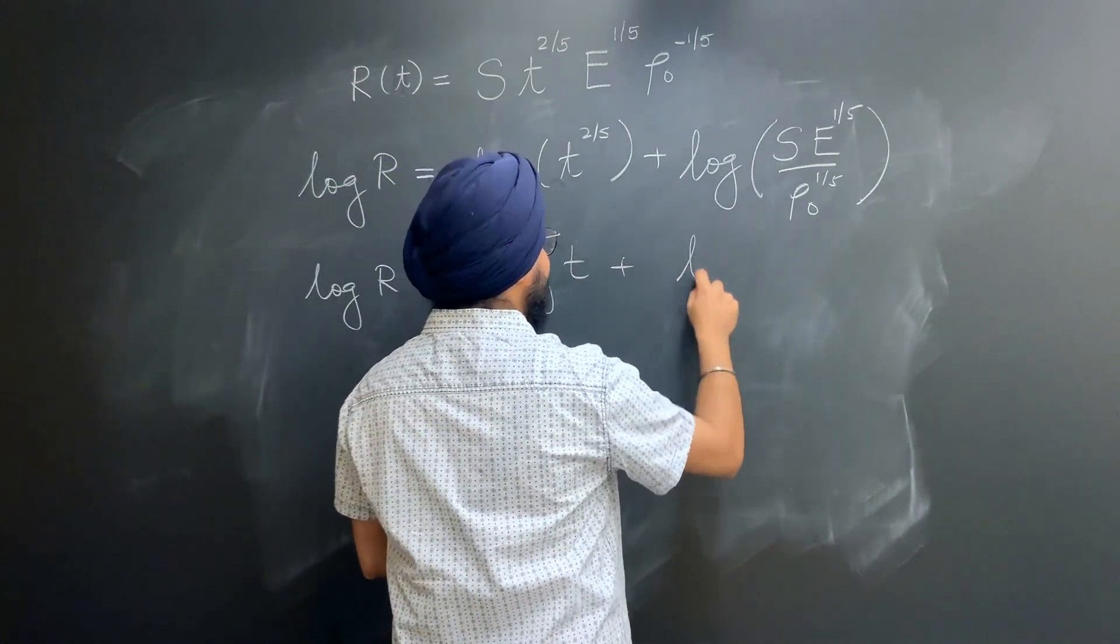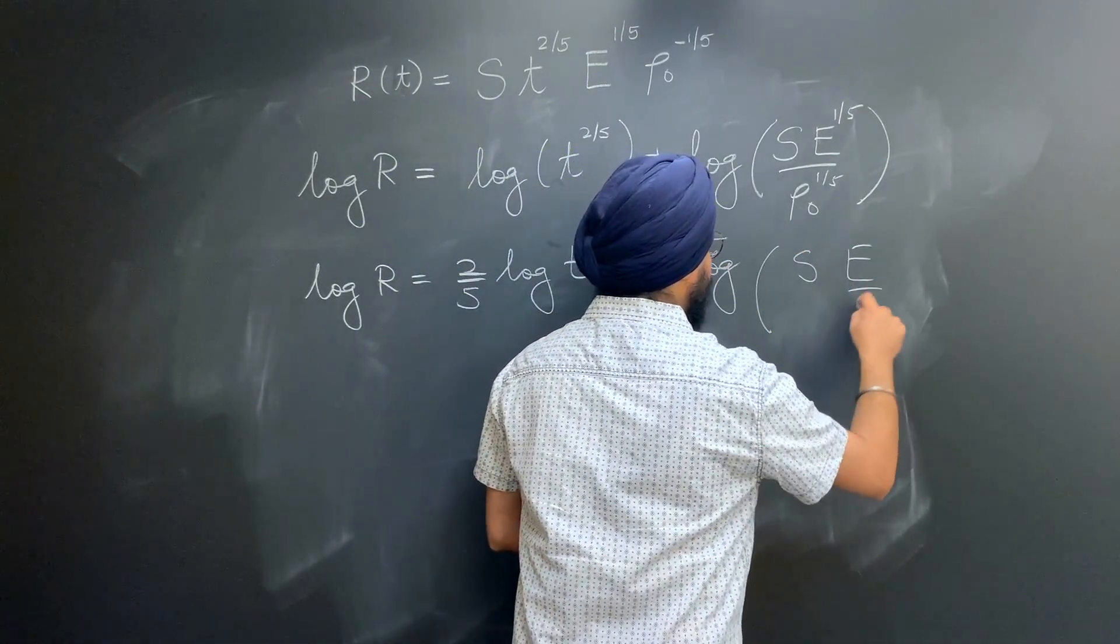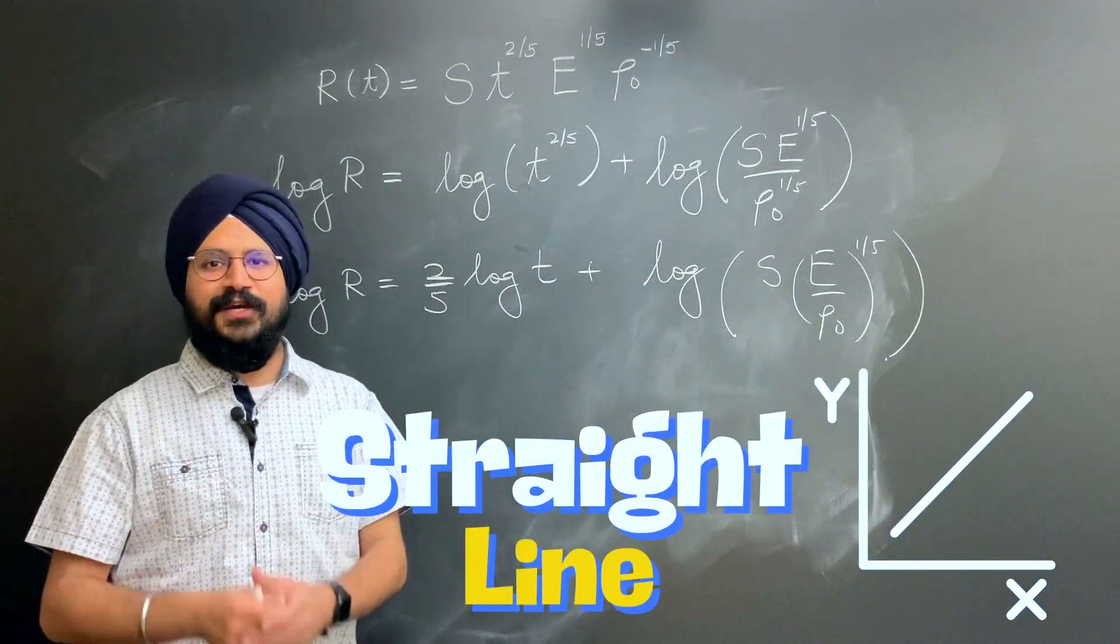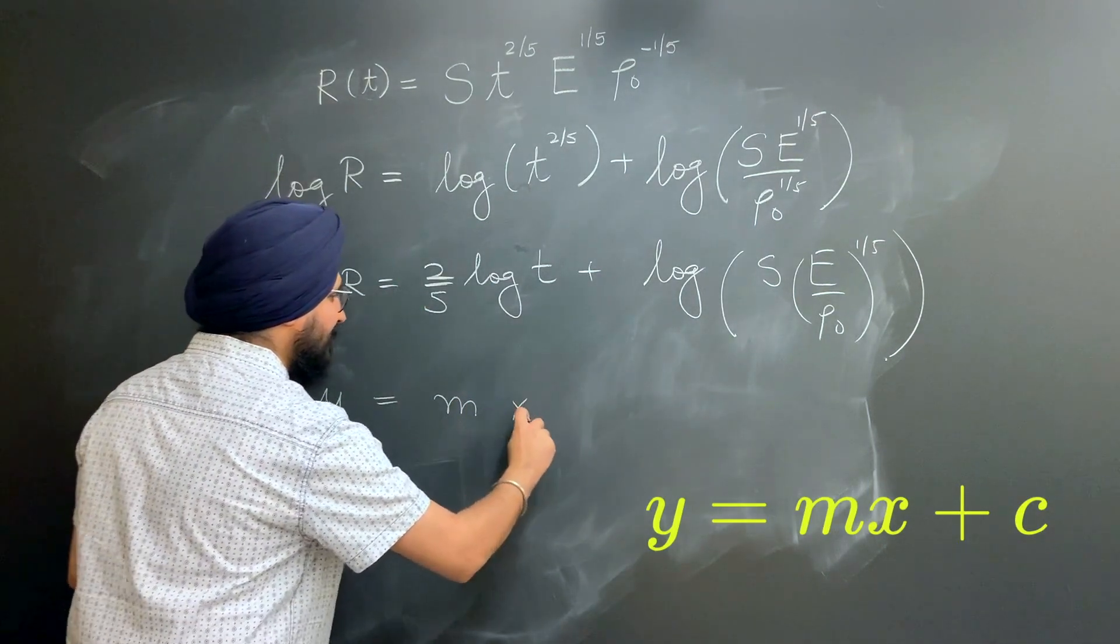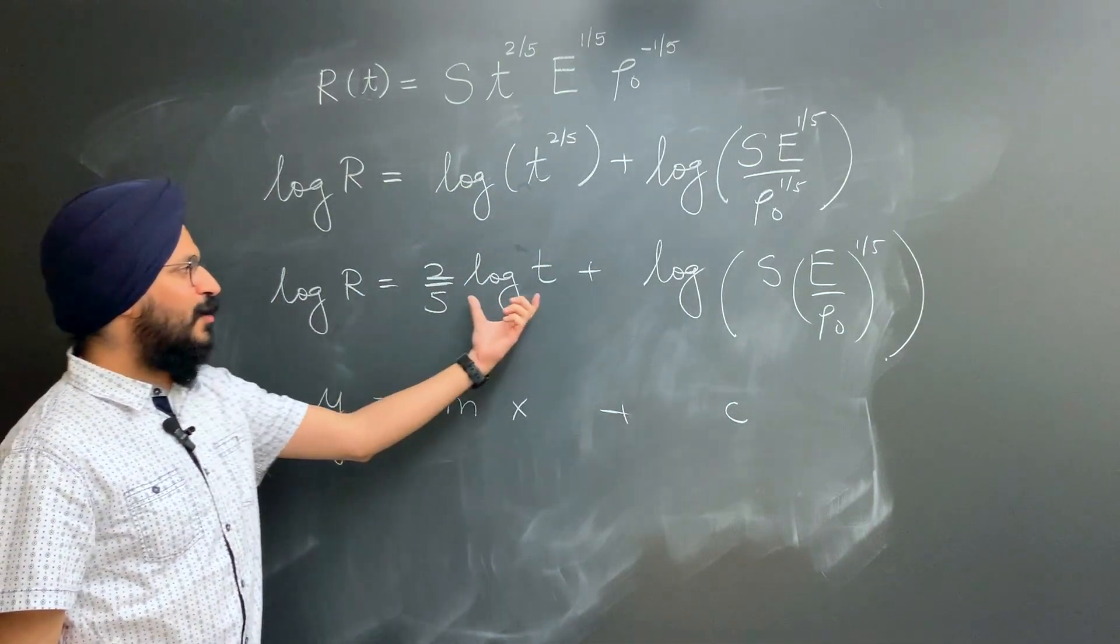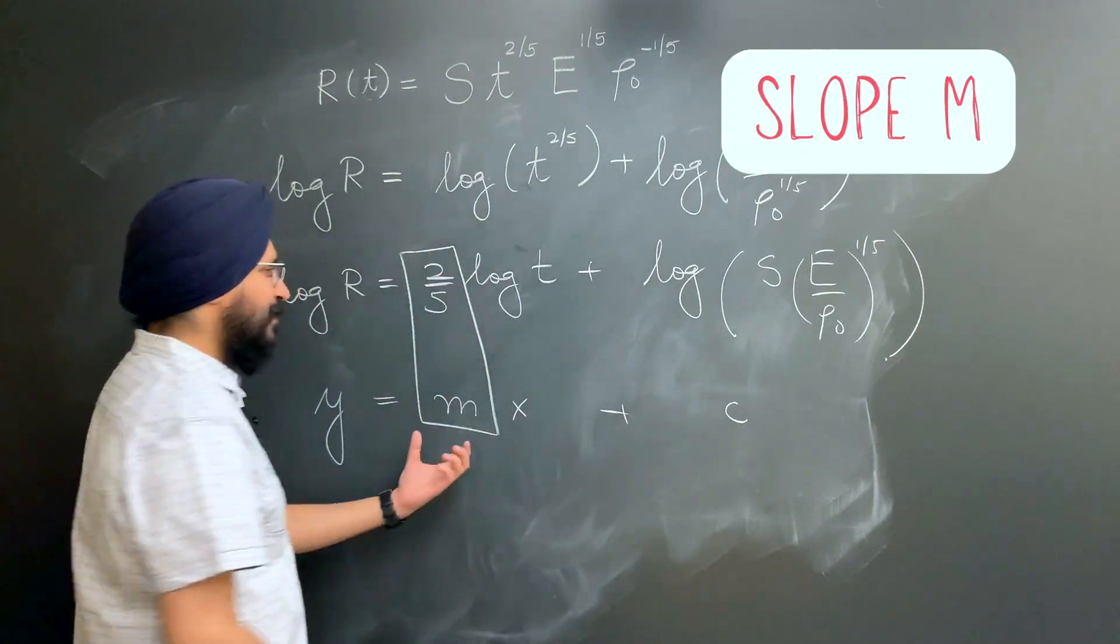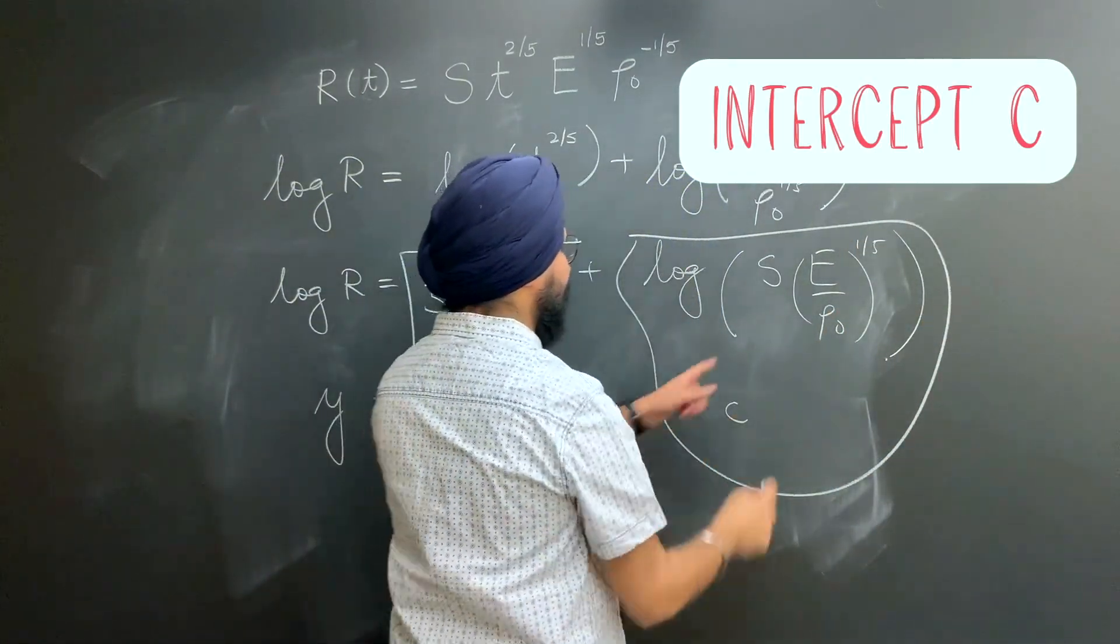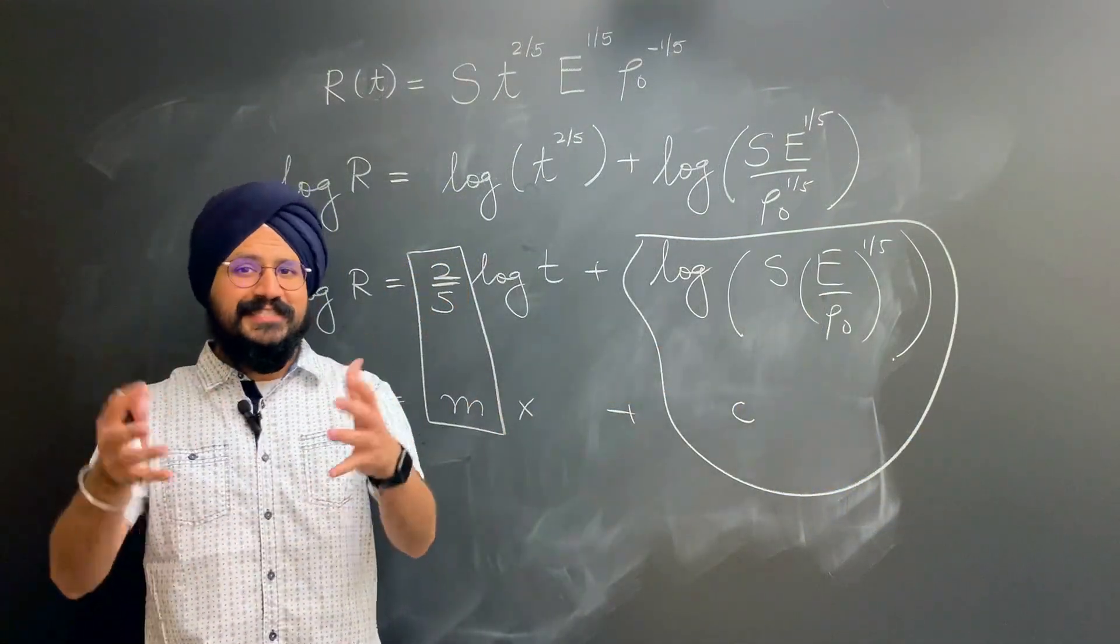Again, remembering the additive nature of the logs, I can write this as log r, I can pull out the exponent from t to the 2/5 and I will get 2/5 times log t plus a constant independent of time log s E over rho not to the 1/5. This is our beloved equation for a straight line y equals mx plus c. In our case, log r and log t are linearly dependent through a slope m equals 2/5, and the intercept c contains information about the energy of the blast wave. Let's put our model to the test now.